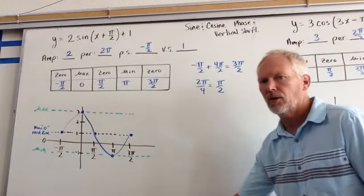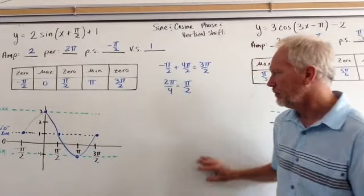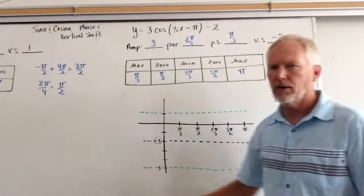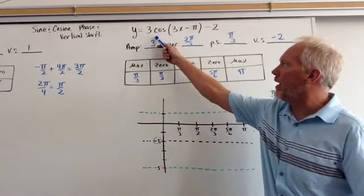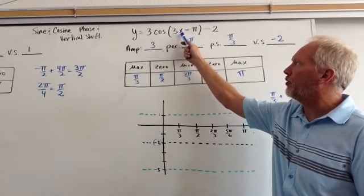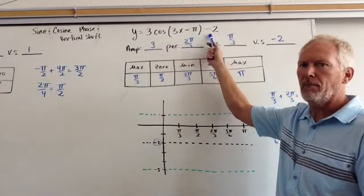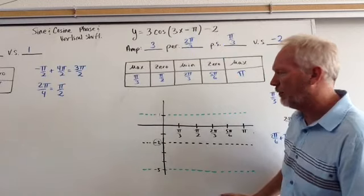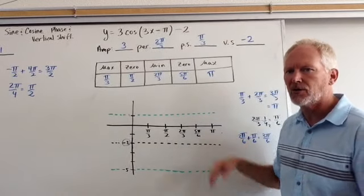Now, let's look at the cosine curve. Example for cosine: we get y equals 3 cosine of 3x minus pi minus 2. So now we've got a vertical shift of 2 units down.